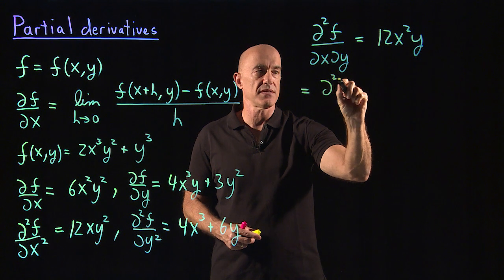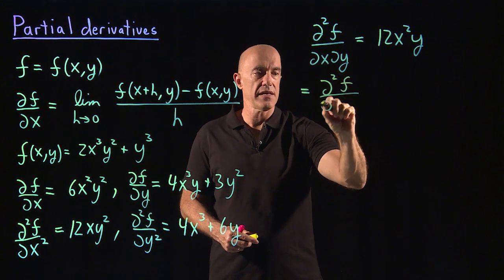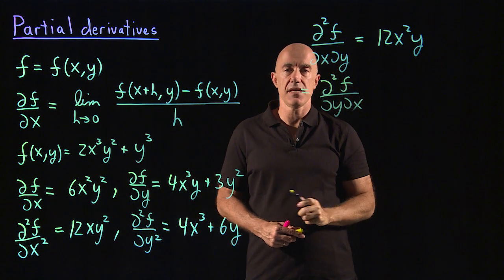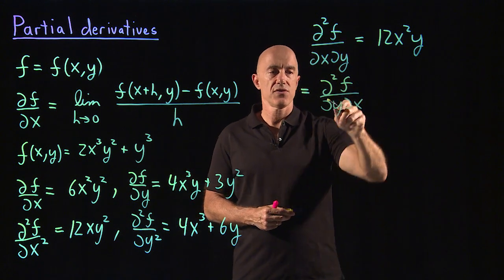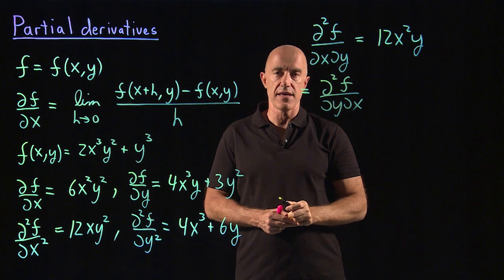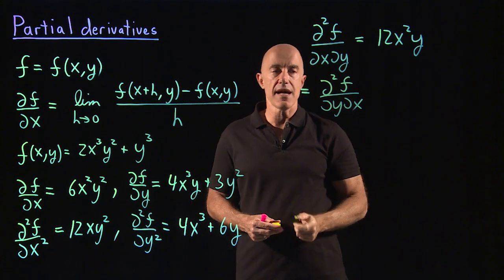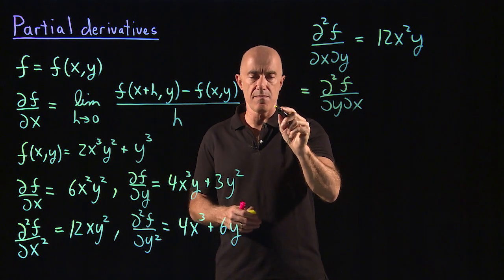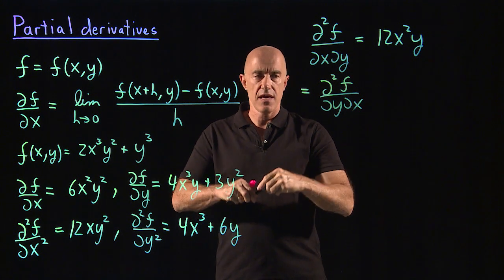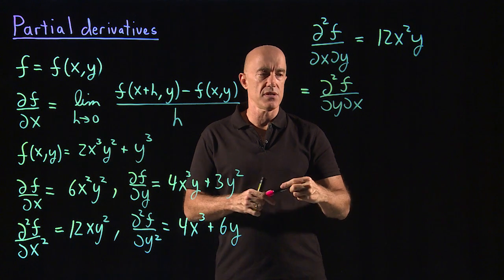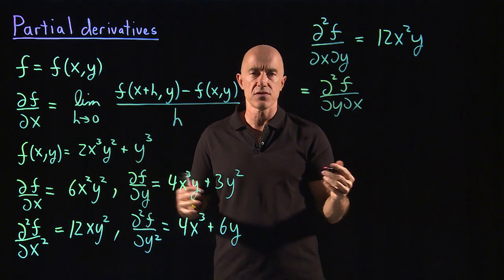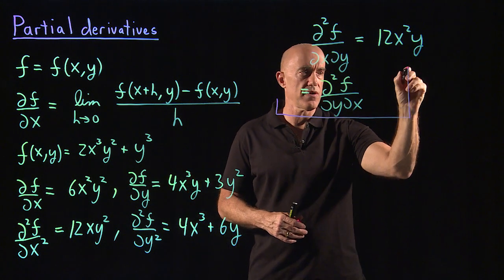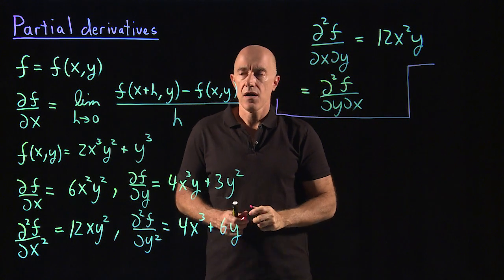So partial squared f over dy dx equals partial squared f over dx dy. The mixed partials don't depend on the order that you take the derivative. That's true for all reasonable functions — you can make it mathematically precise by imposing continuity on the function and all its derivatives. Engineers usually don't need to worry about that.